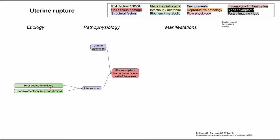What also predisposes you to rupture of the uterine muscle is high pressure in the uterus — uterine distension. This can happen during pregnancy if the baby is big. Fetal macrosomia can predispose you to uterine distension, and a common cause of fetal macrosomia is gestational diabetes. In addition, a post-term pregnancy lasting longer than 40 weeks can cause increased uterine distension because the baby continues to grow through those extra weeks, leading to a bigger baby.